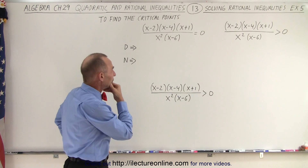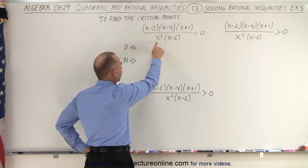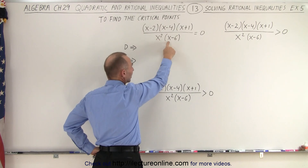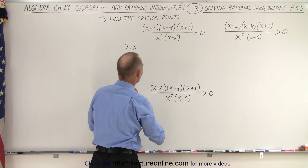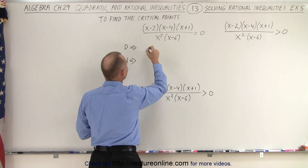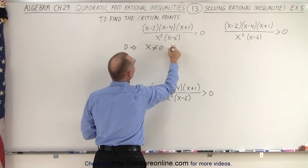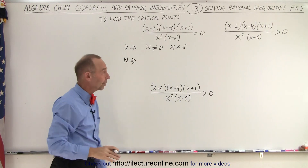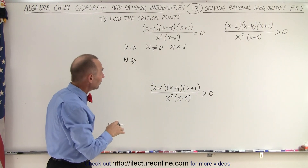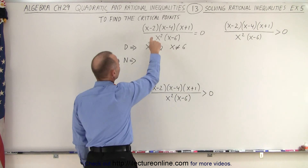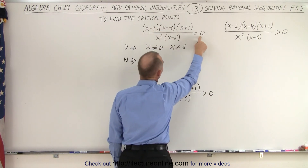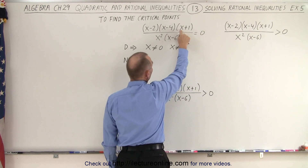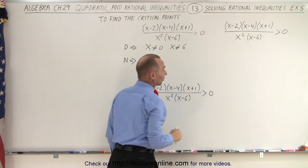For example, x cannot be zero because zero squared is zero — that makes the denominator zero — and x cannot equal six. So the two critical points from the denominator are x cannot equal zero and x cannot equal six. From the numerator, we can see that if x equals two, the numerator is zero. When x equals four, the numerator is zero, and when x equals negative one, the numerator is also zero.